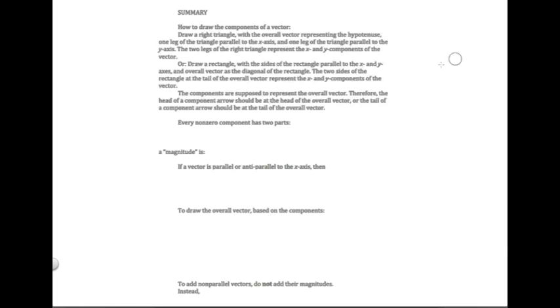How do you draw the components of a vector? We went over two methods. One method was to draw a right triangle, where the components are the legs and the overall vector is the hypotenuse. The other method is to draw a rectangle, where the components are the sides of the rectangle and the overall vector is the diagonal.